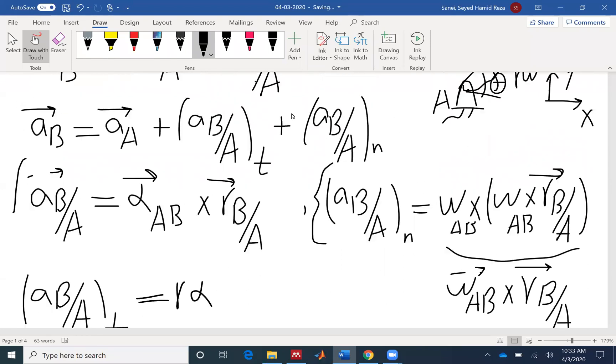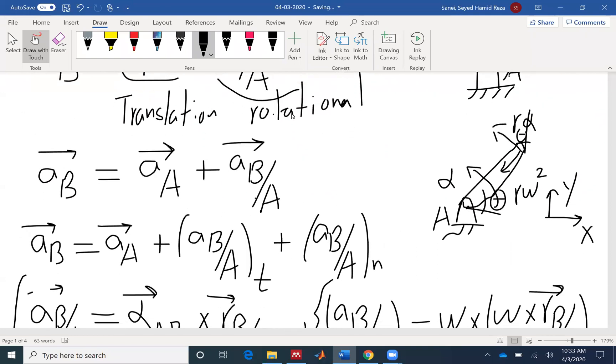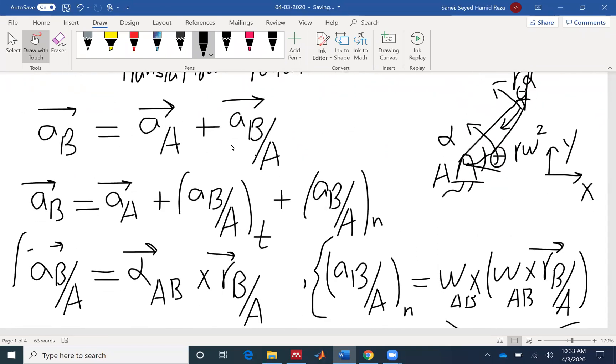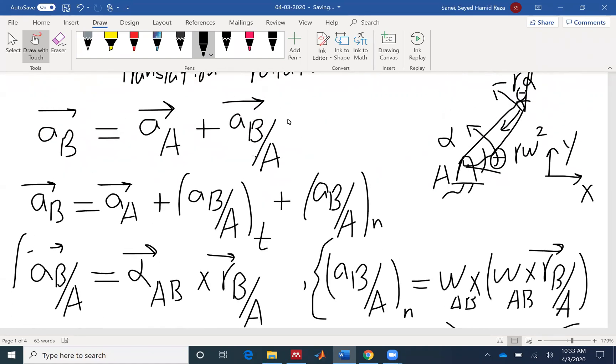So for acceleration equation, you need to remember we have two components. So we wrote the two components for AB with respect to A. But even AB and AA can have two components as well. Whenever we are talking about acceleration, unless either alpha or omega is zero, then we have two components that we need to include in our equation of formulation.